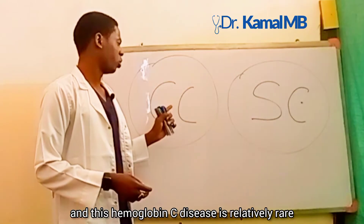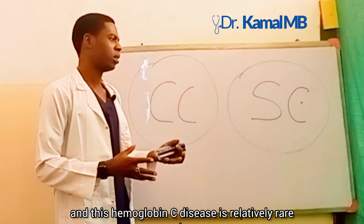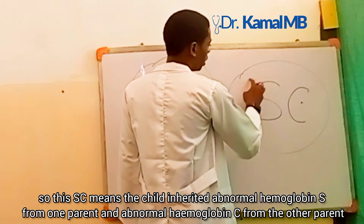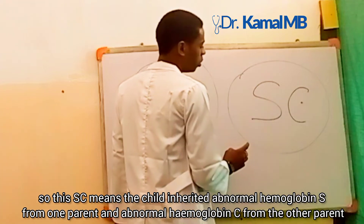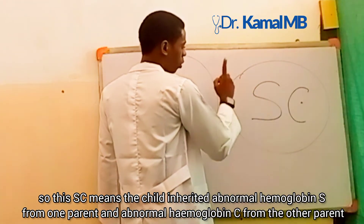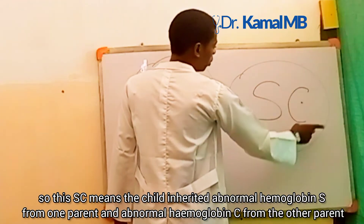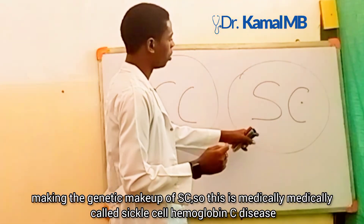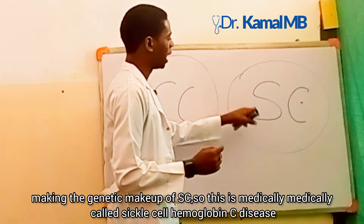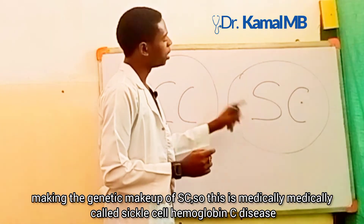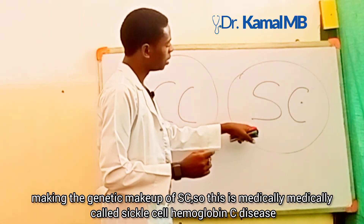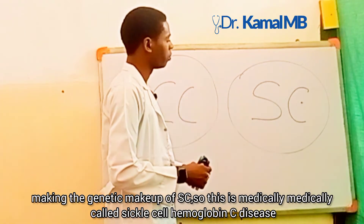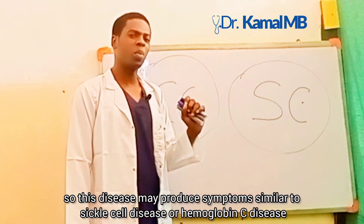Hemoglobin C disease is relatively rare. SC means the child inherited abnormal hemoglobin S from one parent and abnormal hemoglobin C from the other parent, making the genetic makeup SC. This is medically called sickle cell hemoglobin C disease, and this disease may produce symptoms similar to sickle cell disease or hemoglobin C disease.